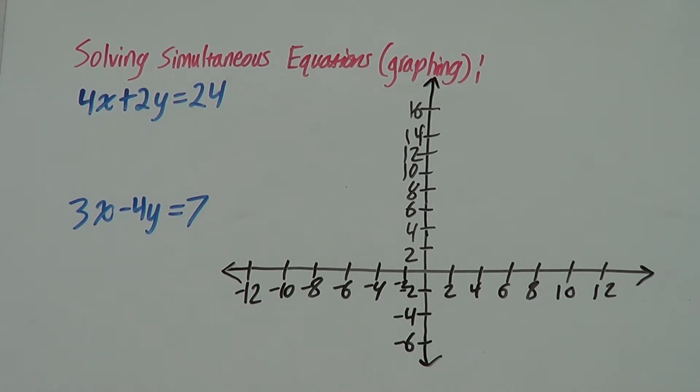So, the basic idea behind solving simultaneous equations by graphing is we have our two equations. We then graph them and find the point where they intercept. The coordinates of the point where they intersect are the solution to our simultaneous equation.